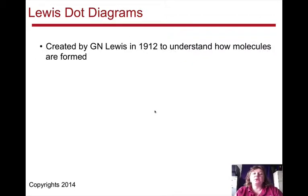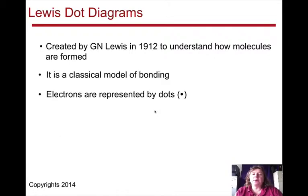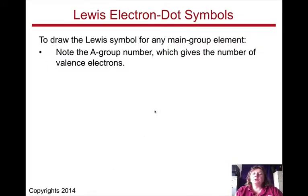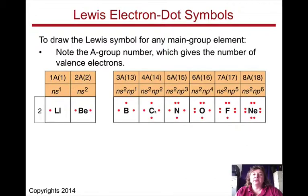Lewis dot diagrams were created by G.N. Lewis in 1912 to understand how molecules are formed. It's a classical model of bonding, and the electrons are represented by dots. To draw the Lewis symbol for any main group element, you need to note the A group number, which gives the number of valence electrons. So looking at the second row periodic table, you can see we go from lithium all the way to neon, increasing the number of valence electrons, starting with one up to a complete octet.